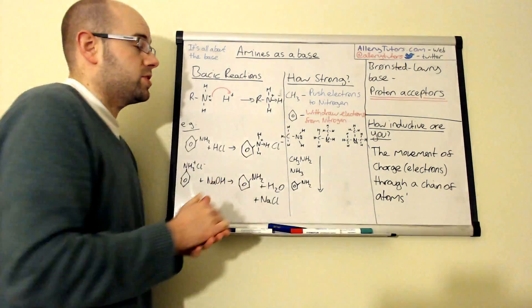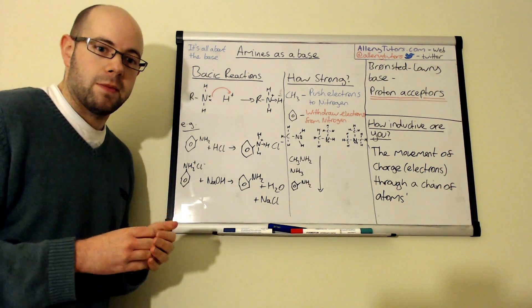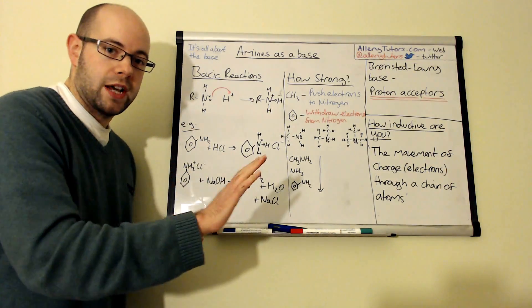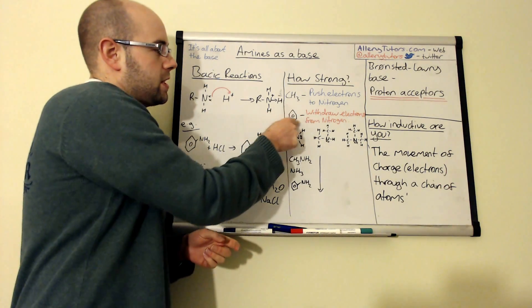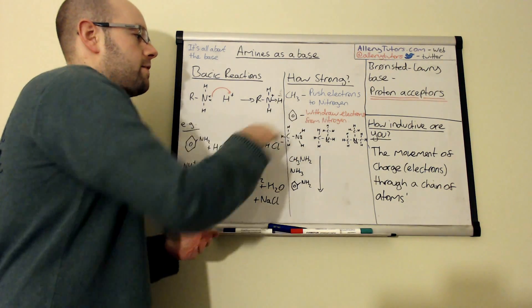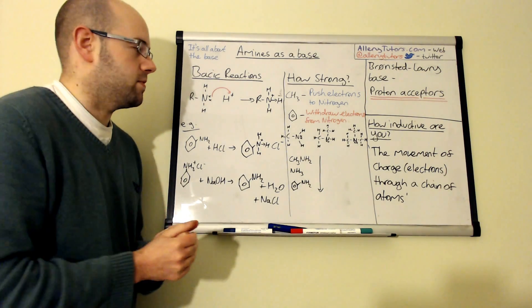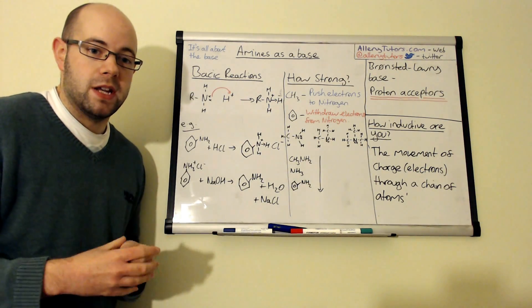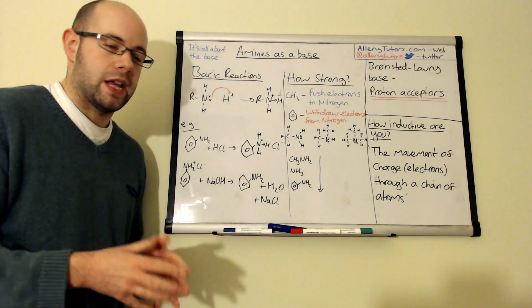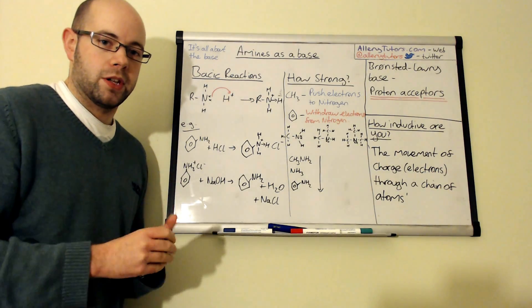So for example we've got CH3 groups. Now CH3 groups actually push electrons into the nitrogen and we class them as positive inductive effects. So these are a group or groups of molecules that push electrons in towards your nitrogen whereas things like benzene groups here or phenyl groups they withdraw electrons from nitrogen and so effectively we call them negative inductive effects. Now what this all means is what makes an amine a good base or a strong base is in fact the availability of the lone pairs of electrons on the nitrogen. So the more available they are to a proton then the more basic that molecule is.